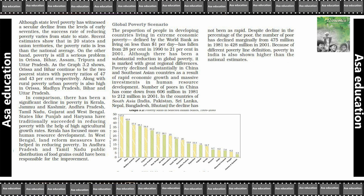Kerala has focused more on human resource development. In West Bengal, land reform measures have helped in reducing poverty.